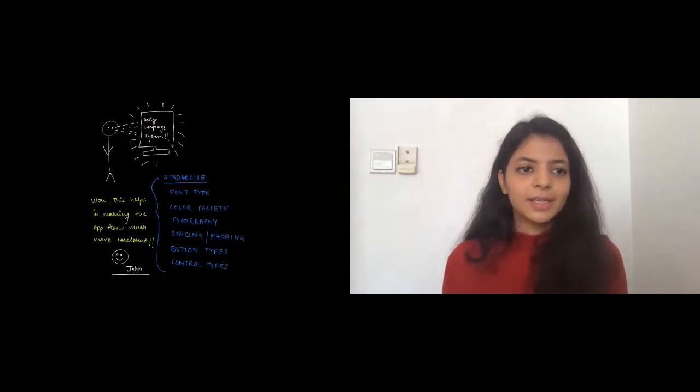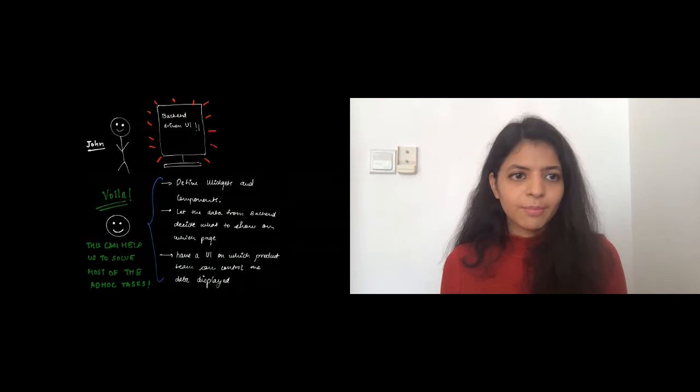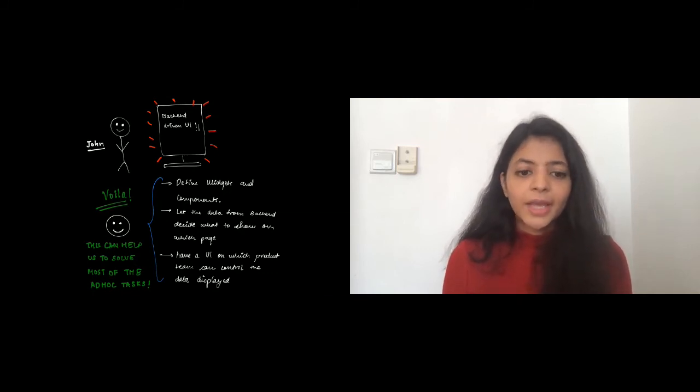That night, John started to brainstorm if there was a way the team could avoid doing repetitive tasks, if new app releases could be avoided for smaller changes, and maybe the product team has the power to update widgets on the fly with minimum dev effort. While searching about ways to solve these issues, John came across DLS. He understood if he could standardize the basic UI elements, it would be a significant improvement in quality of releases and reduction in development time. Then he comes to know about the concept of driving your UI from backend. Having reusable components and widgets defined, the backend can decide what to be shown on what pages. Having a separate tool for the product team to control what is shown would be perfect.